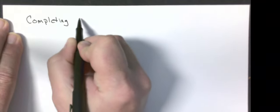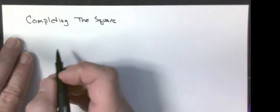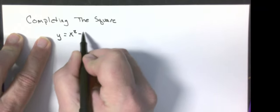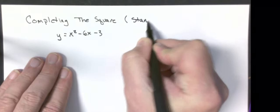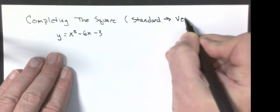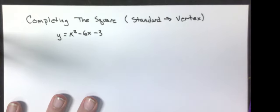The next skill we need is converting from standard form into vertex form. That process is called completing the square. We need to take something like y equals x squared minus 6x minus 3 and turn it into vertex form — we'll call this 'standard to vertex.'